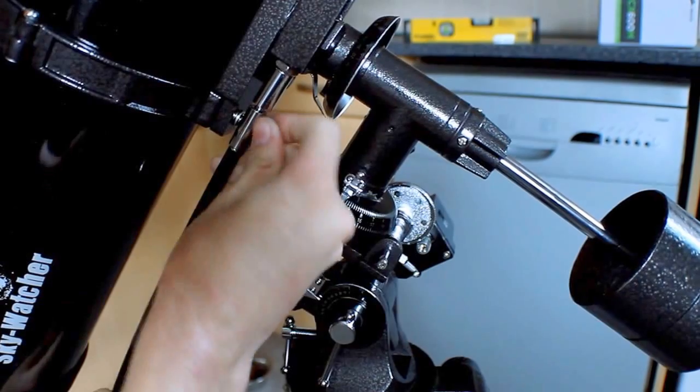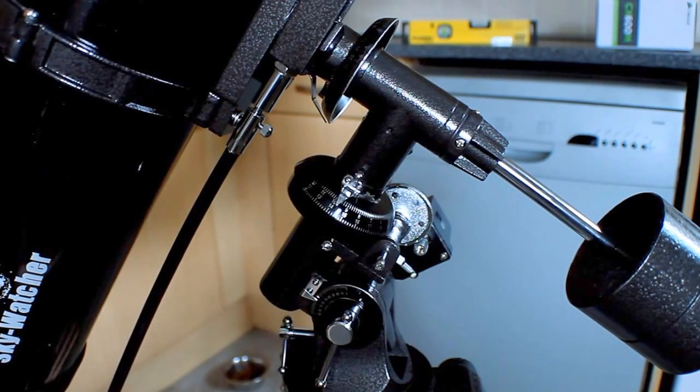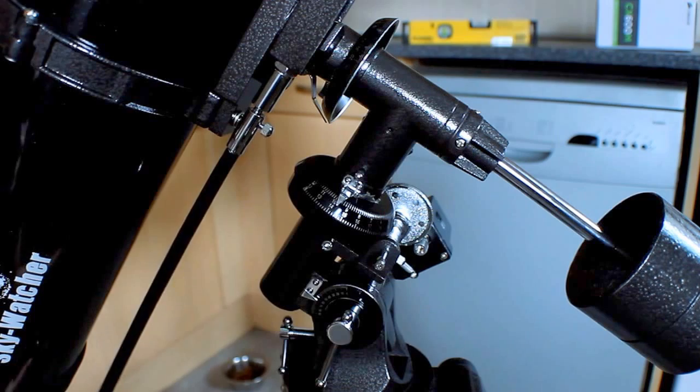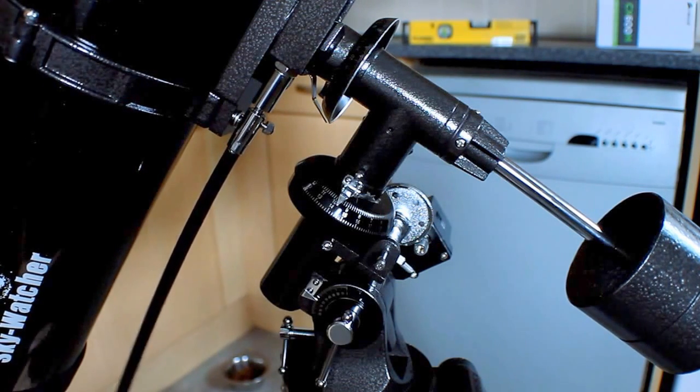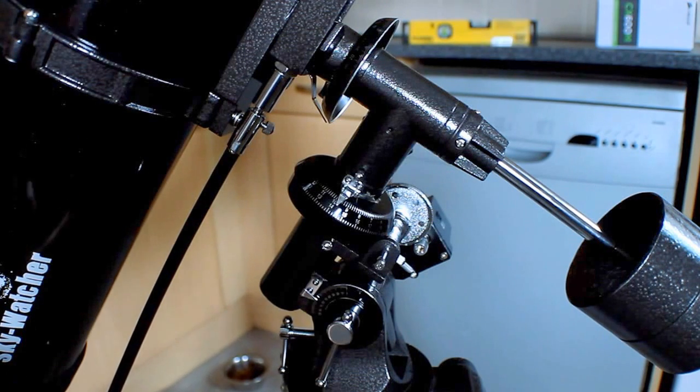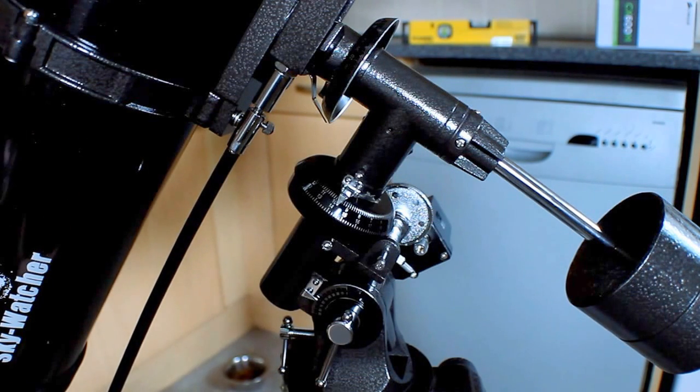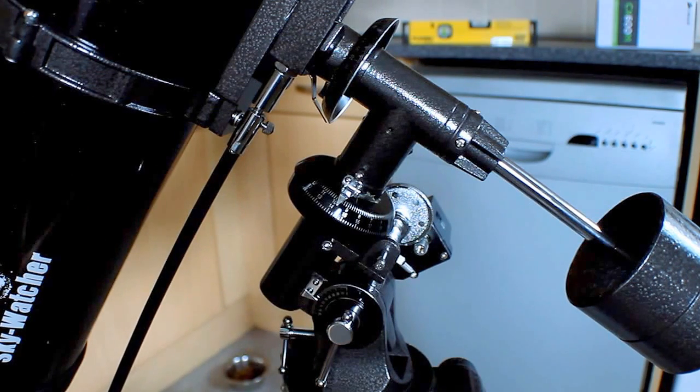Also, you have these, one here, and one that is usually here. These are your fine adjustment knobs, so you go roughly to where the object is, and then you can slowly turn it using that. That allows you to get nice, precise movements that are able to center an object in the middle of your eyepiece. Now, I haven't got one here because I've got a motor on the other side, so I can use the controls for fine adjustment.